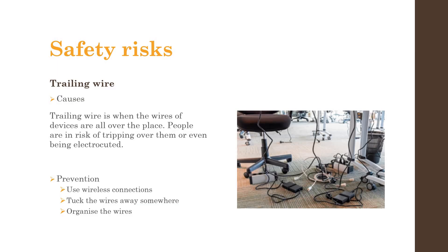Next, trailing wire is when the wires of all the devices are all over the place, which may cause people to trip over them or even be electrocuted. This can be avoided by using wireless connections or organizing and tucking the wires somewhere.